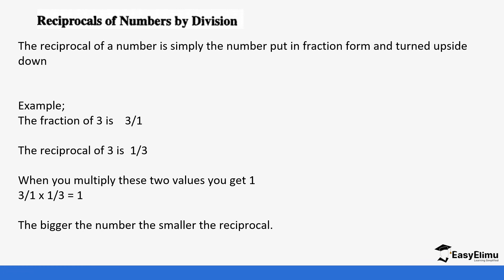If you have a very big number, let's say 20, the reciprocal of 20 is going to be 1 over 20. The bigger the number — comparing 1 over 20 and 1 over 3 — you'll notice that 1 over 20 is smaller than 1 over 3. So the bigger the number, the smaller the reciprocal. 20 is the biggest number but it forms the smallest reciprocal.